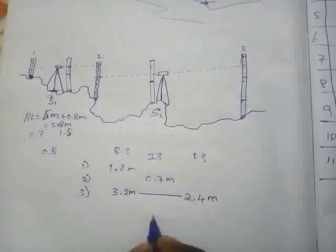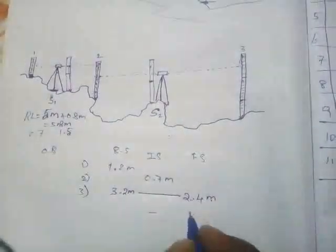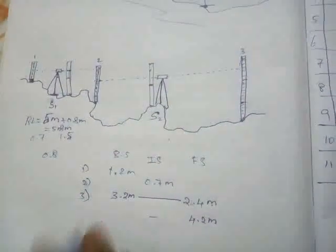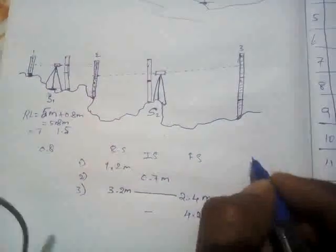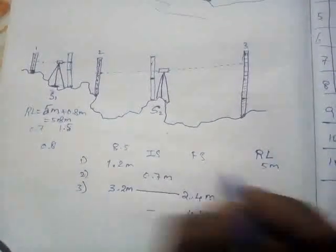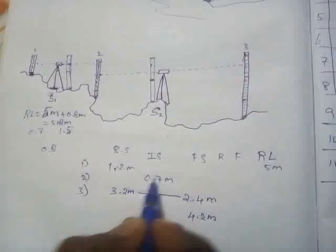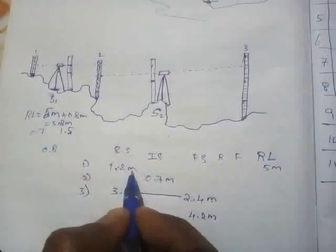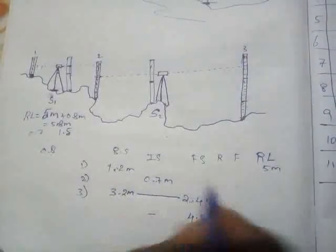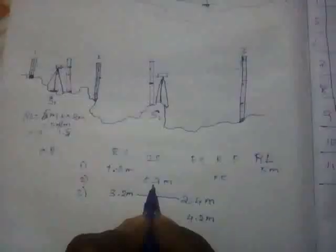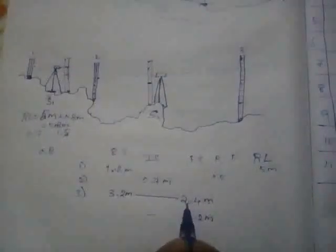The height is 4.2 meters. This is the height to the surface. This height is 4.2 meters — the ground level is 5 meters. Rise: 1.2 meters, leveling staff 1.7 meters. Then 8 meters, 2.0 meters. Paling 0.5 meters, 5 meters, 0.7 meters. Then 1.7 meters minus 0.7 meters.